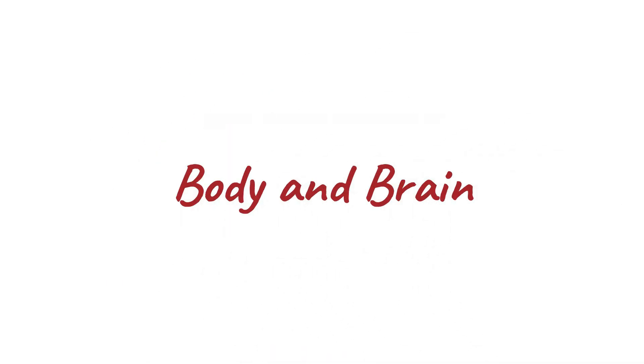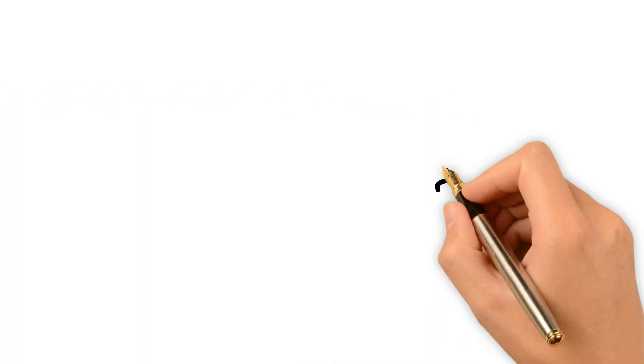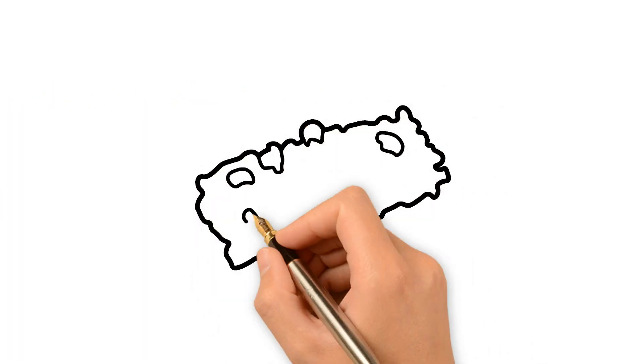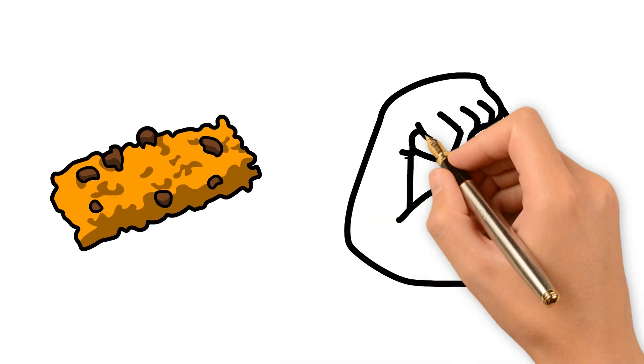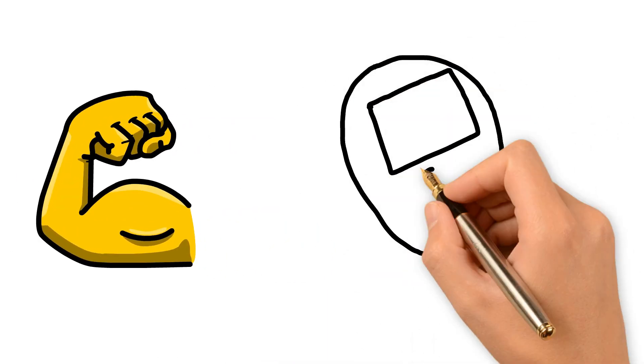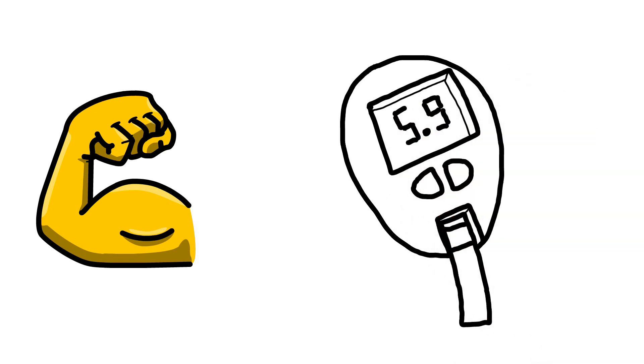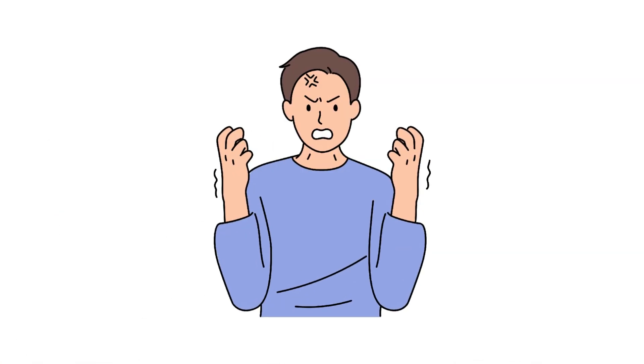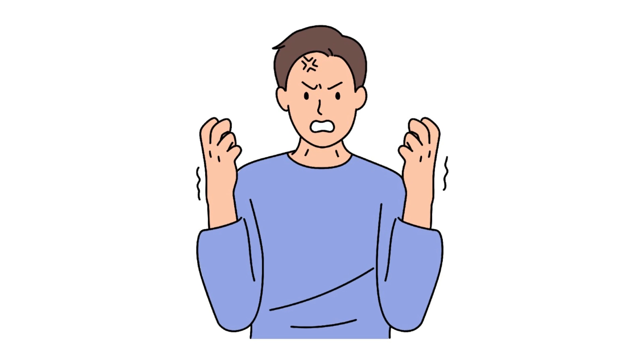Body and Brain: Sugar rush myth. That candy bar won't give you a burst of energy followed by a crash. Sugar provides energy, but blood sugar fluctuations are more about the type and amount you consume. Spikes in blood sugar can lead to temporary alertness, but not a sustained rush.